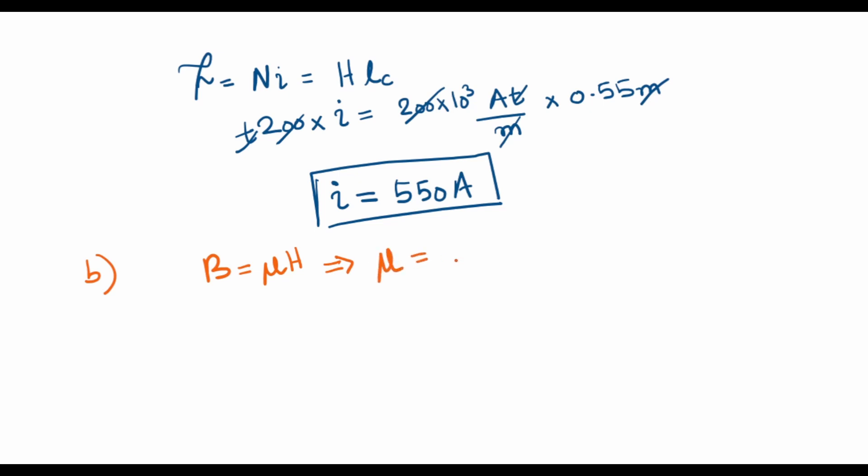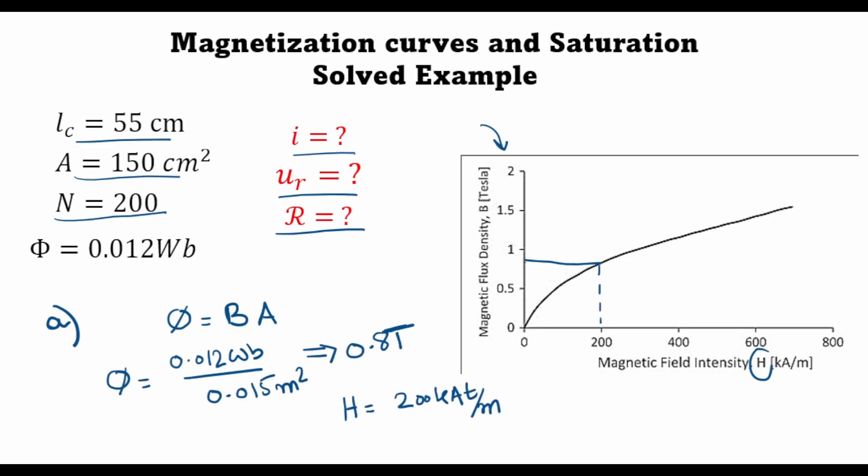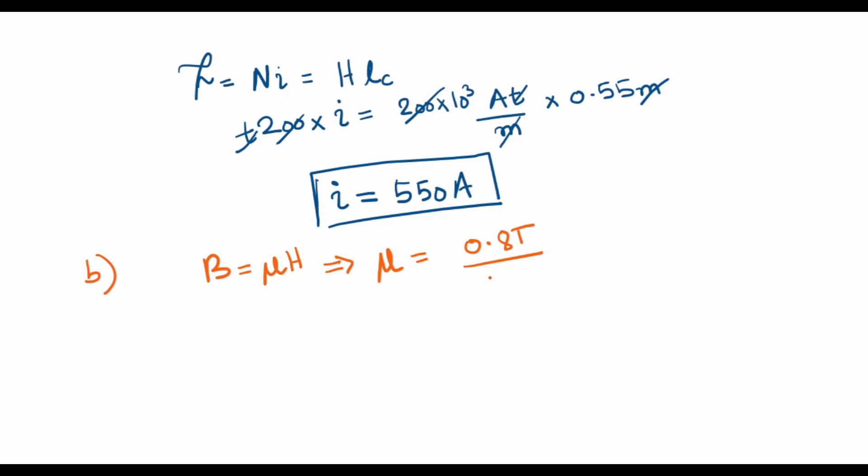And from here I can calculate the permeability as 0.8 tesla divided by the magnetic field intensity, which I calculated as 200 kilo ampere turns per meter, and this comes out as 4 times 10 to the power minus 6. Now mu itself is equal to the product of mu naught times mu r, and this product is equal to 4 times 10 to the power minus 6.